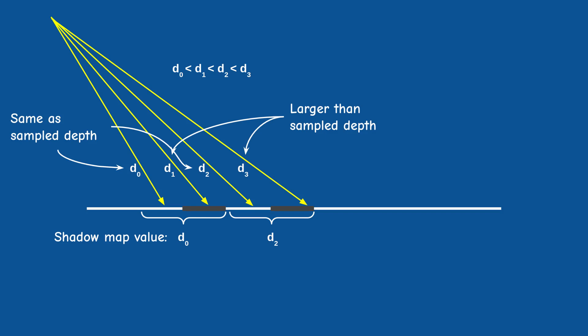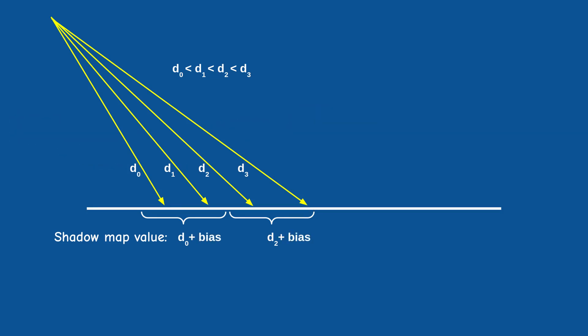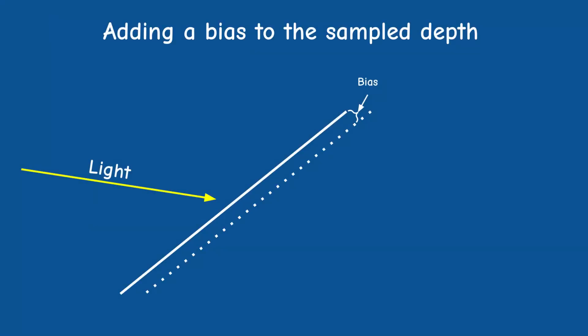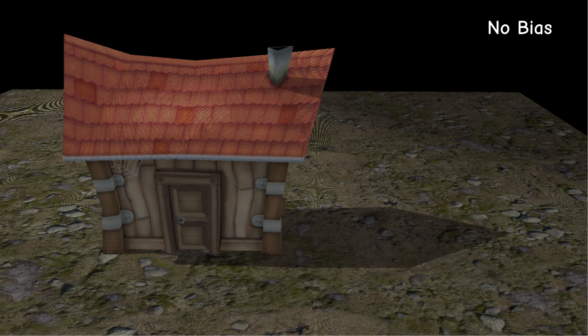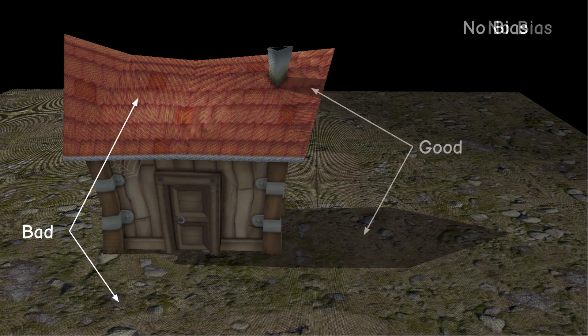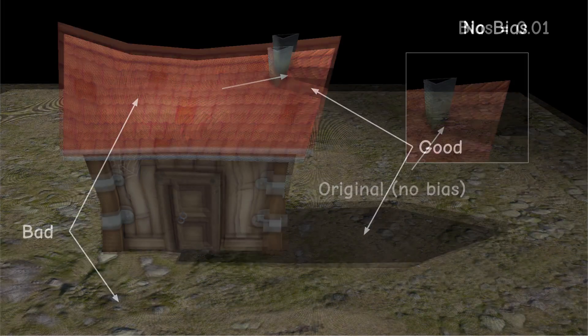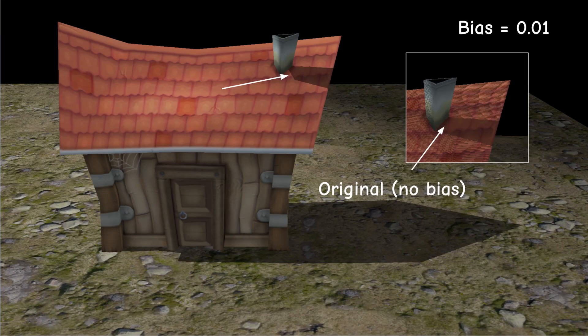I did mention this problem in a previous tutorial and the solution there was to add a small bias to the depth from the shadow map. This bias kind of pushes the shadow map away, allowing the problematic pixels to win the shadow test. However, in some cases when there is no bias we can see the problem on the terrain and the roof of the house, but the shadow of the house itself and the chimney actually looks good. If we add a bias the problem on the terrain is gone but we have a new problem with the house and the chimney — the bias causes the shadow to drift away, a problem known as Peter Panning.